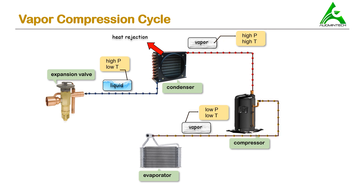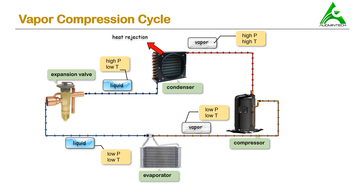This liquid refrigerant now enters the expansion valve. The function of the expansion valve is to expand the liquid refrigerant. Because of this, its pressure falls. And now the liquid refrigerant has low pressure and low temperature. But just to note, the state of the refrigerant remains the same — it is still in liquid phase.